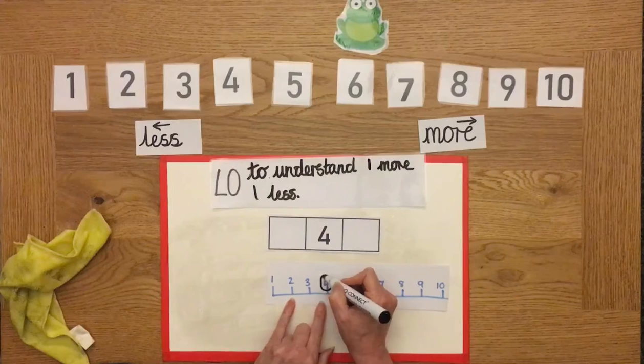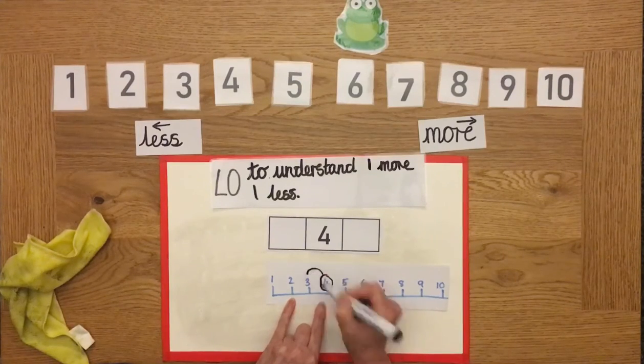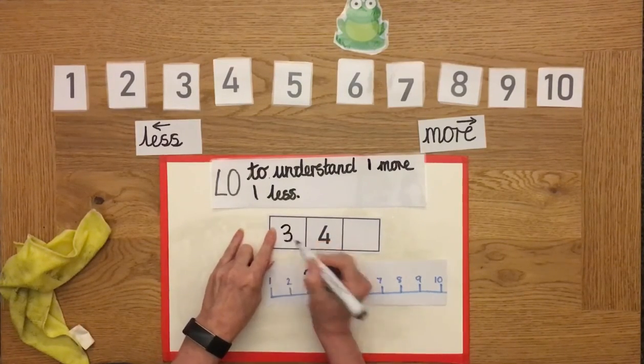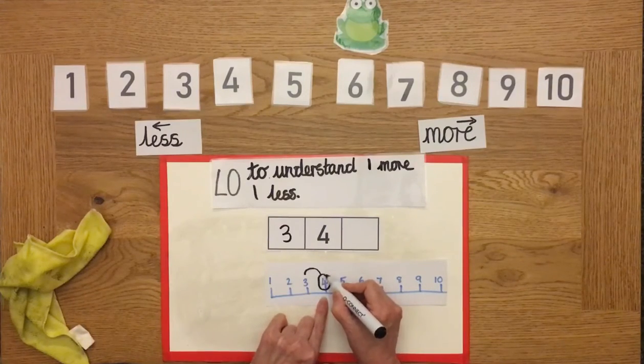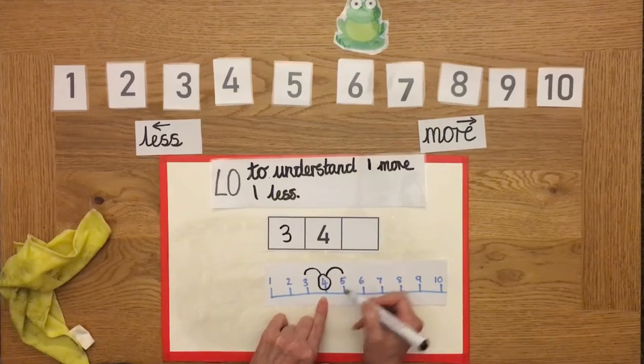Now to go one less is three and to go one more is five.